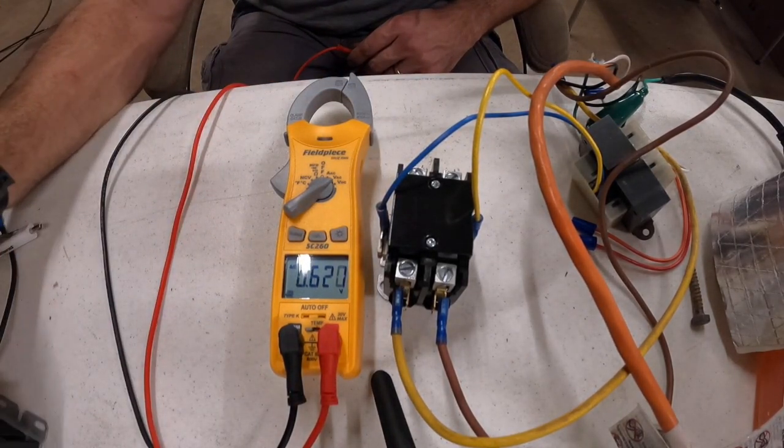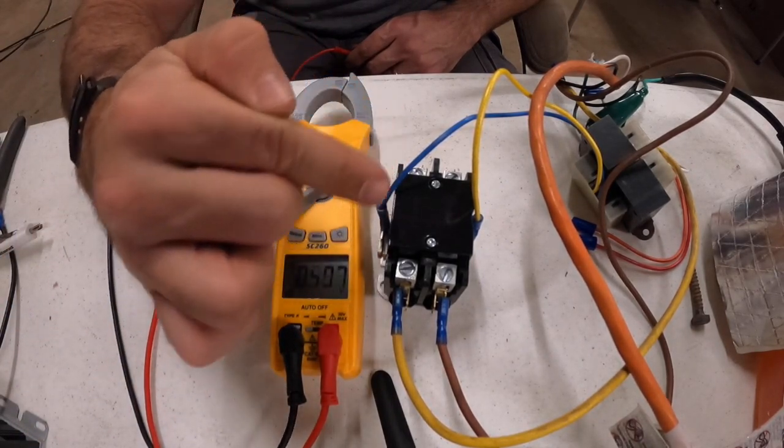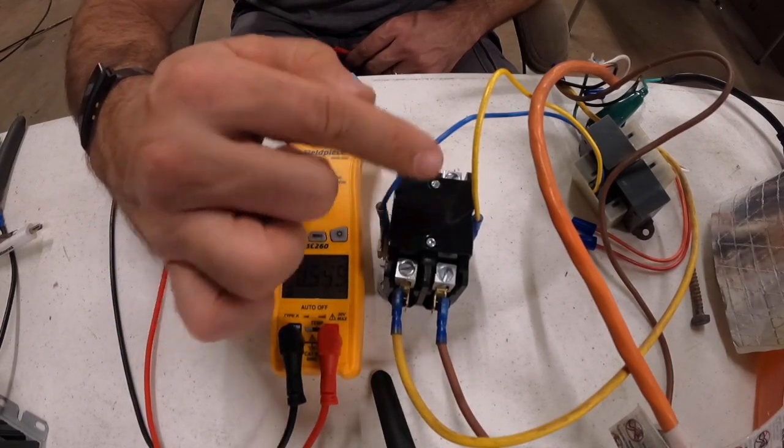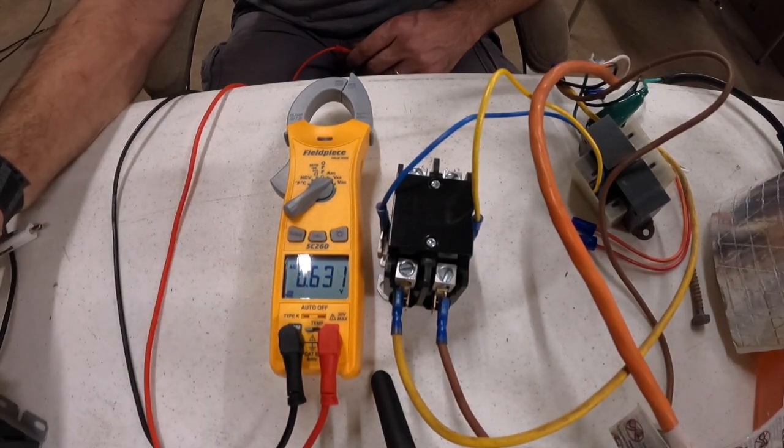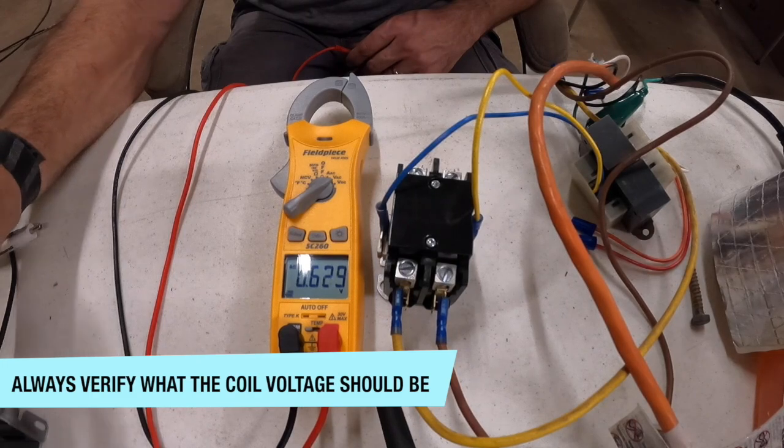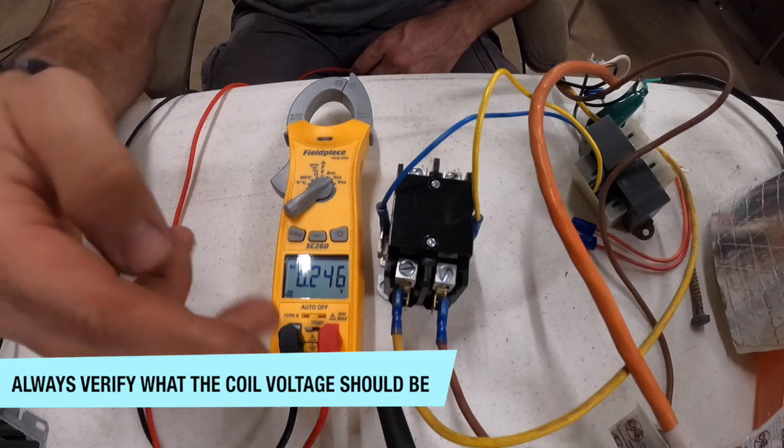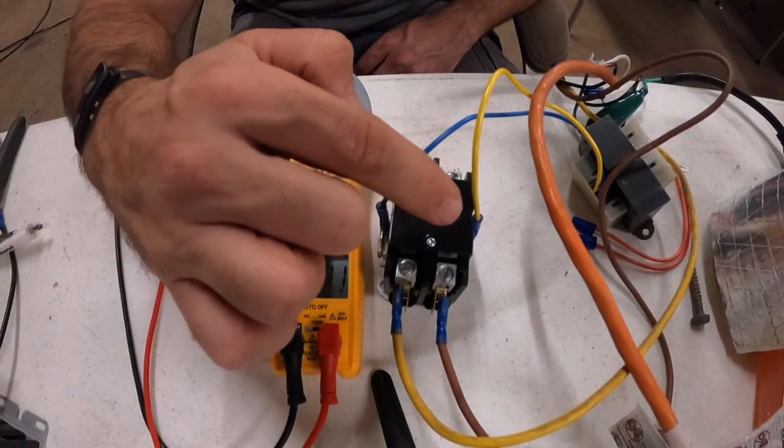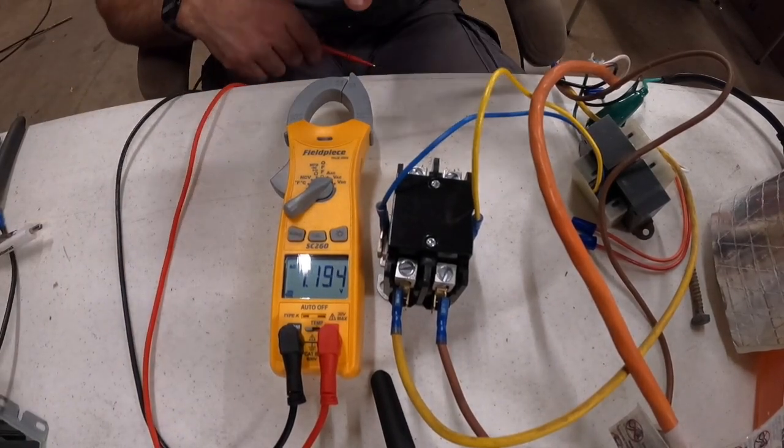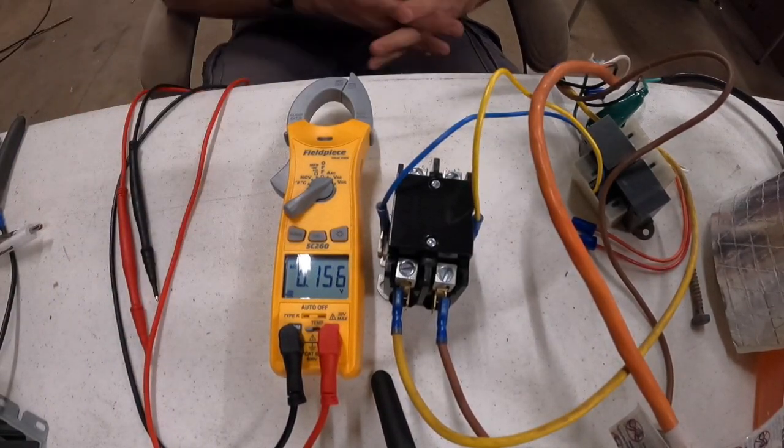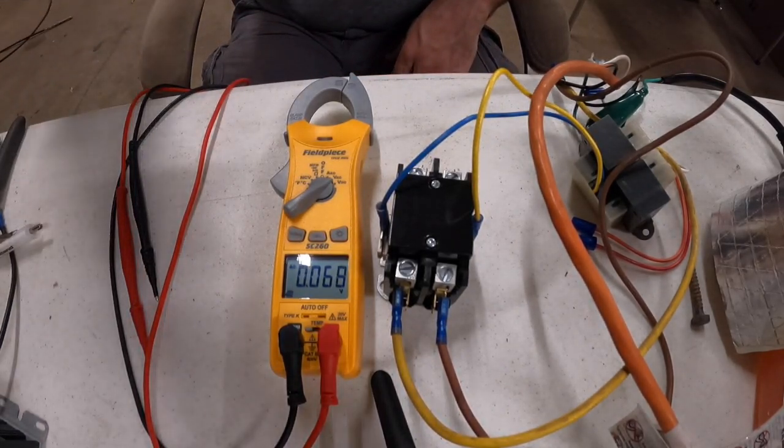The same principle applies for the single-pole and the three-pole. You're just verifying the coil voltage is there and that there's no significant voltage drop across each pole. Sometimes I've seen on bigger commercial units the coil will be 120 volt or 240 volt, so you'll be checking for 240 volts on the control side or 110, or whatever it is that the contactor specifies or the equipment manufacturer specifies. Please click the subscribe button. I hope you enjoyed this video.